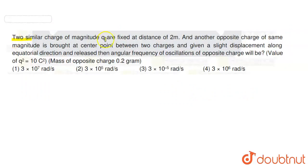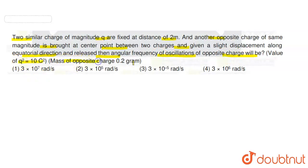In this question, we have given two similar charges of magnitude Q fixed at a distance of 2 meters, and another opposite charge of same magnitude is brought at a center point between the two charges and given a slight displacement along the equatorial direction and released. Then the angular frequency of oscillation of the opposite charge will be... given Q² = 10 coulomb², mass of opposite charge = 0.2 gram.